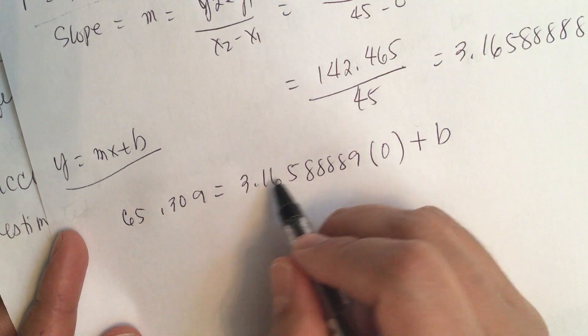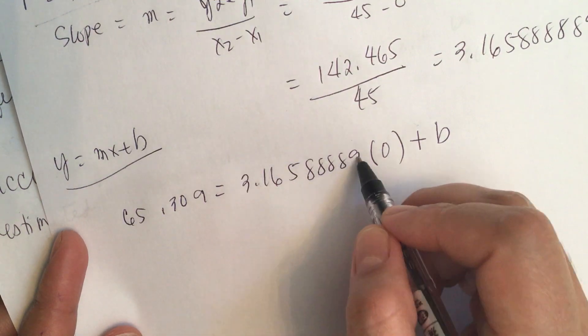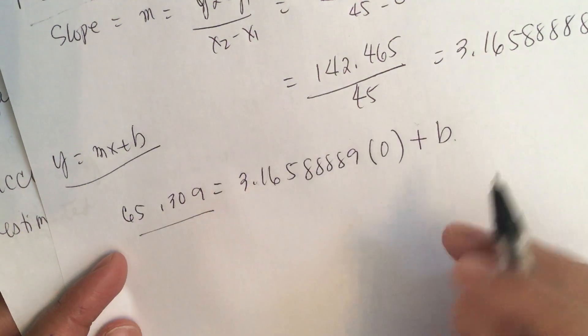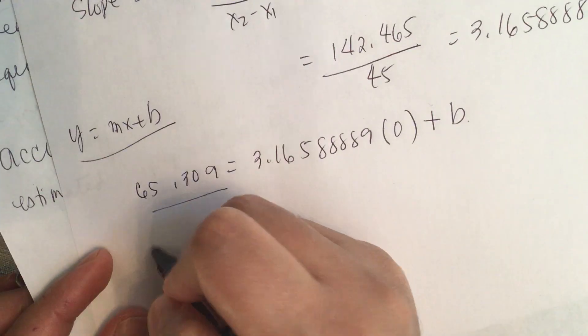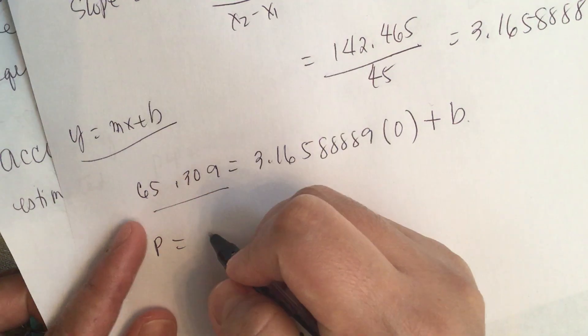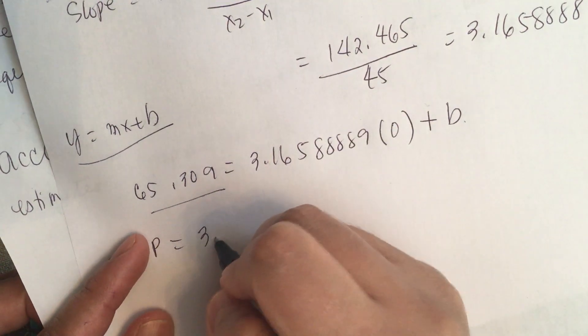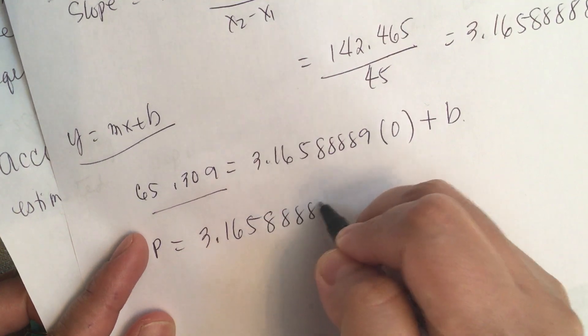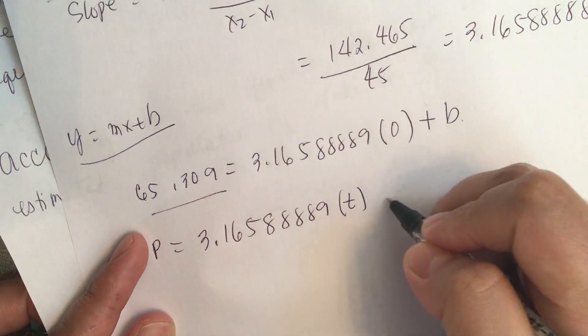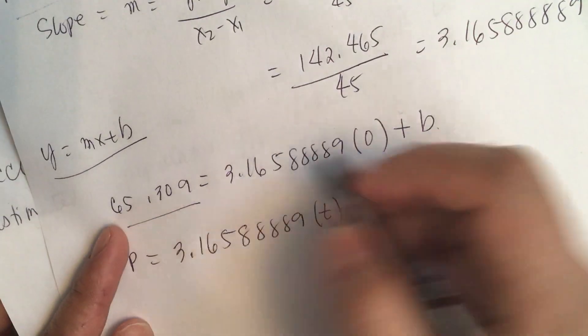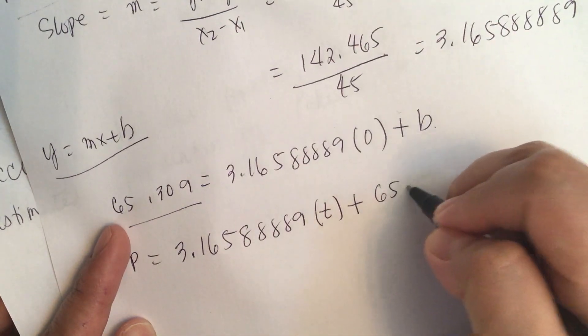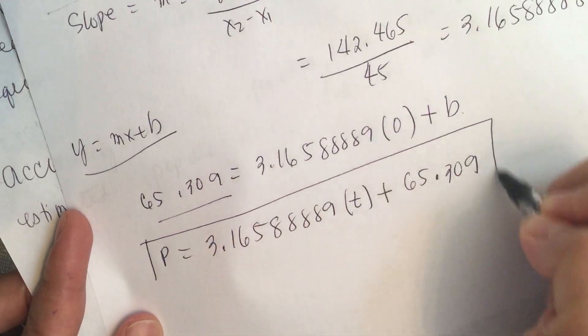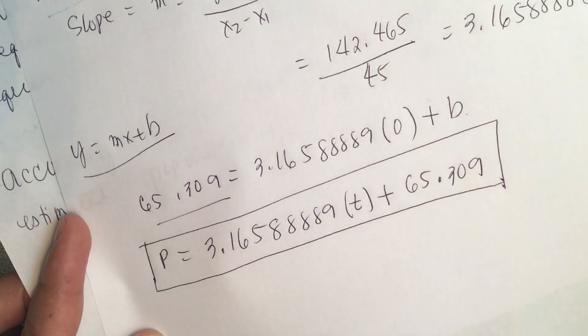3.165888889 times zero is zero, so B is basically this one. Now we have our linear function. P is equal to 3.165888889 times T plus 65.309. This is the linear function.